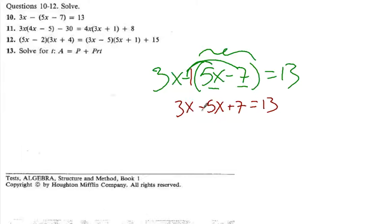Alright, 3x minus 5x, combining similar terms, is going to be negative 2x. And I haven't done anything with the 7 or the 13, so I'm just going to rewrite it. Minus 7, subtracting 7. So I have negative 2x is equal to, what is that, 6.